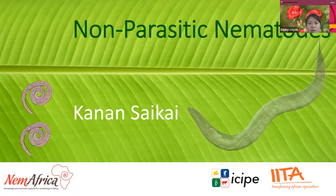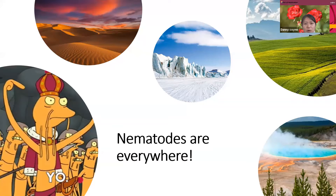As the title says, nematodes are everywhere. You can find nematodes from agricultural land like in this picture, but you can also find them in very extreme conditions — somewhere very hot and dry like a desert, hot and wet like a hot spring, or somewhere very, very cold like the Arctic and Antarctic.